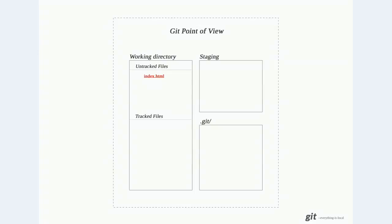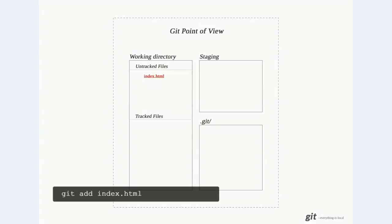To start tracking a file we use the git add command. When we run this command it puts that file on the staging area and now it's ready to be committed to the repo. To do that we use the git commit command, and we use the -m option to attach a message to the commit. That message is a description of the changes that were made. When we run that, a commit is logged to git and the file is marked as tracked.